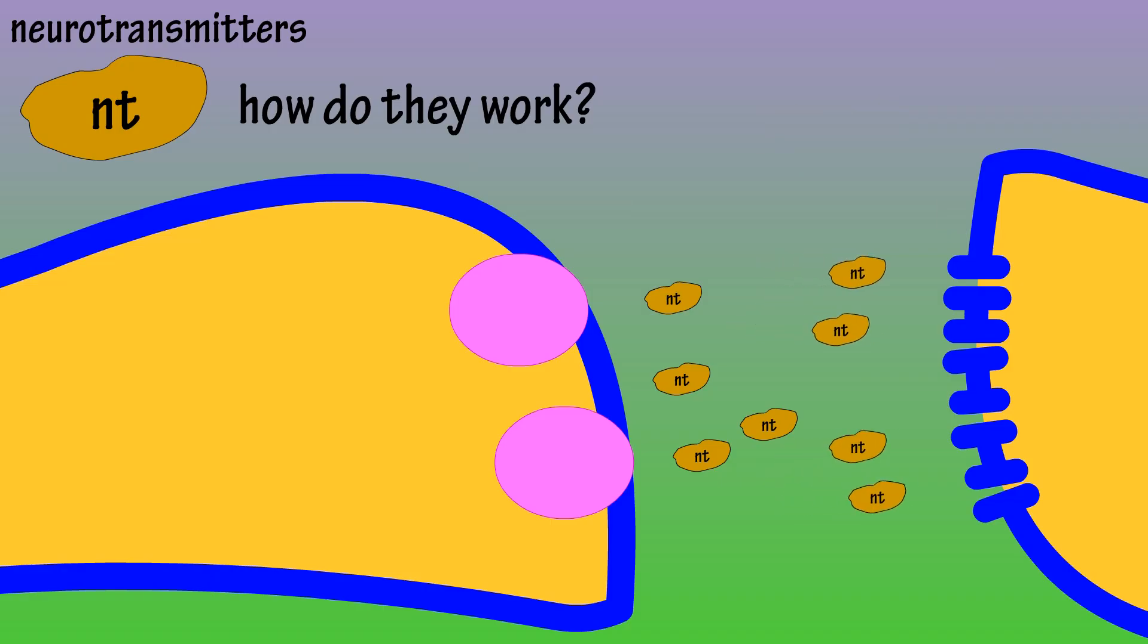These neurotransmitters land on receptor sites of another nerve cell and pass on the nerve impulse. This happens very quickly.